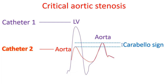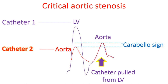When the catheter is pulled out from the LV, the aortic pressure — or femoral arterial pressure if the sidearm pressure is being monitored — rises due to the relief of the further obstruction in critical aortic stenosis which was caused by the catheter across the aortic valve. This phenomenon has been called the Carabello sign or effect.